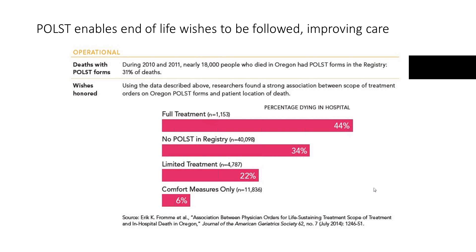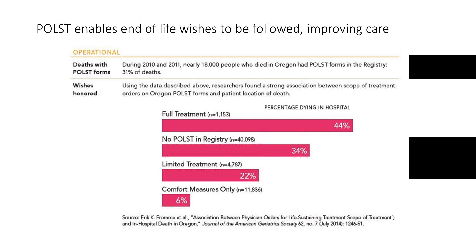If the POLST form identified full treatment — about 1,100 individuals — 44% died in the hospital. There is a clear correlation between establishing healthcare wishes, identifying intensity of care, and where the most intensive care was ultimately received. People who wanted full treatment received the most intensive care, while people seeking comfort measures received comfort-focused care but did not die in the hospital.